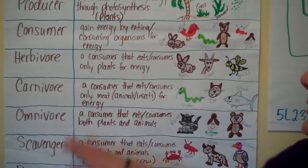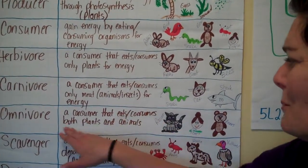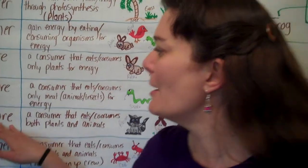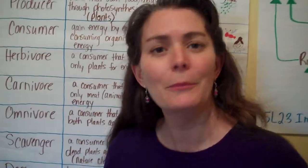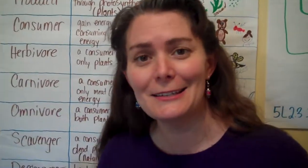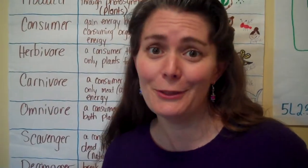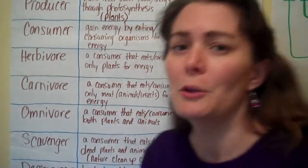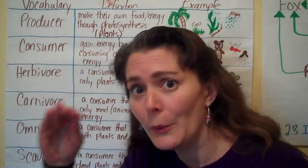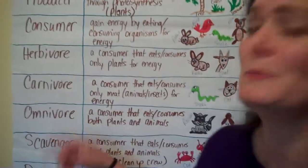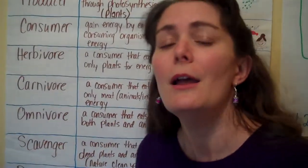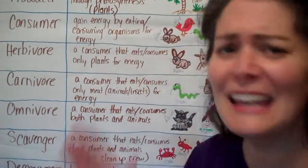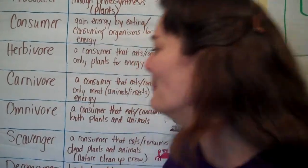Omnivores are consumers that eat or consume both plants and animals. Omnivore — omni — eats a little bit of everything. Omni means all, like you can be omniscient, which means you're all knowing. So omnivores, with 'vores' meaning what they're eating — omnivores eat everything. Whatever they can get their hands on, they're going to munch that stuff down.